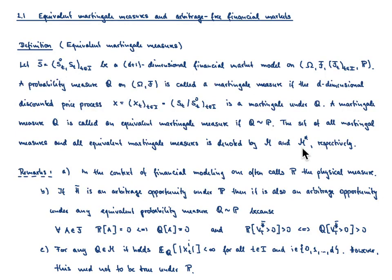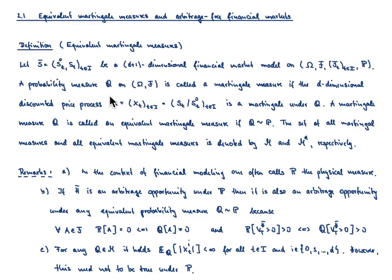Before coming to the first main theorem, let me add a couple of remarks. The first remark is that the probability measure P with which we equipped our filtered measurable space is also called the physical measure. That's the measure which sits in the background, always present. All these equivalent martingale measures and martingale measures are defined on top of our probability space.